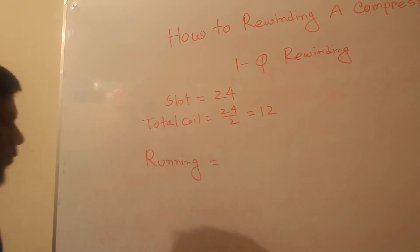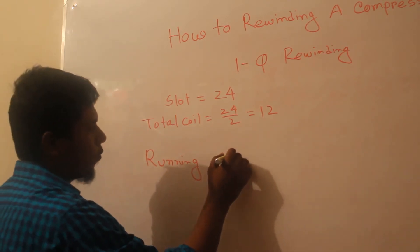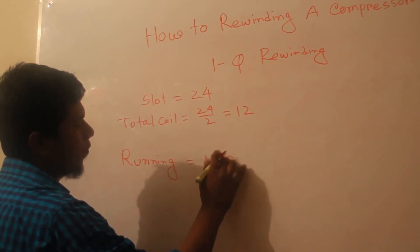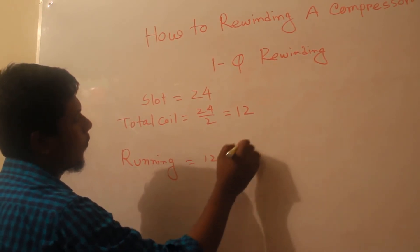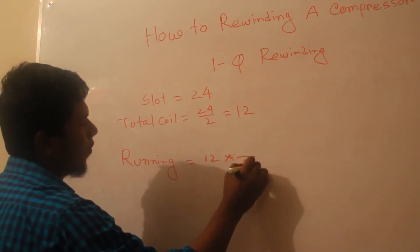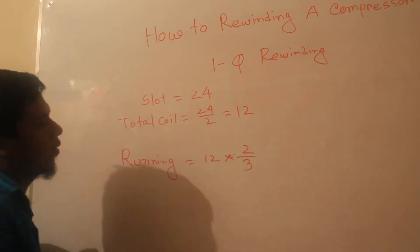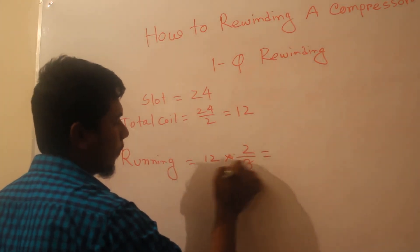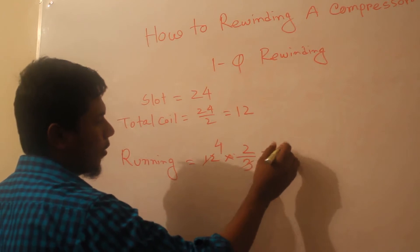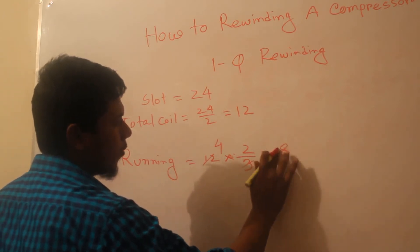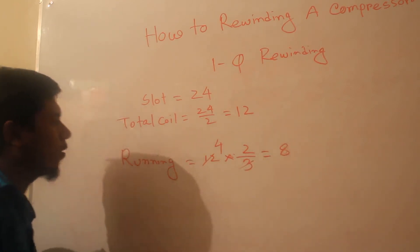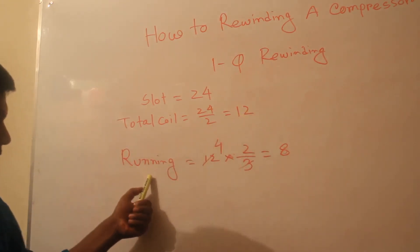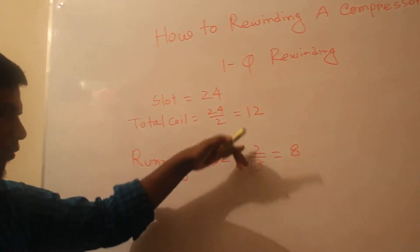The running coil total is N multiplied by 3 divided by 2. So here the result is 8 coils. Total coils are 12. Running coil is 8, so starting coil is 4.